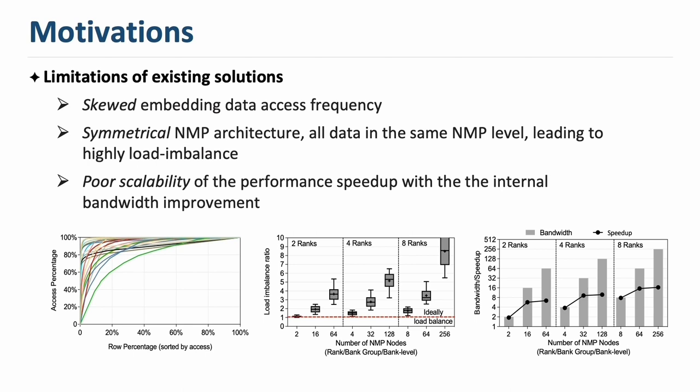However, existing near-memory processing solutions only pursue higher memory parallelism without considering the characteristics of the embedding data. In practice, the embedding data access distribution is usually highly skewed, but existing solutions adopt a symmetric architecture in which all data are handled at the same level of memory parallelism, which causes highly loaded imbalance. For example, a small portion of memory nodes handle most of the memory requests, while most of the others remain idle.